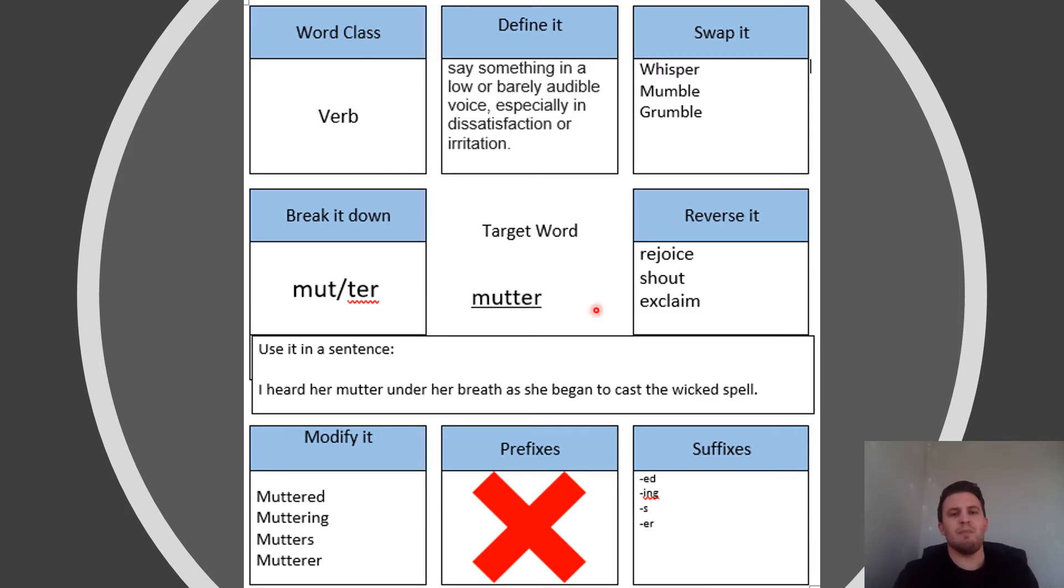Here we go, here are some answers. Mutter is a verb. It's an action, it's a doing word. It means to say something in a low or barely audible voice, so very, very quiet. We normally tend to mutter if we're dissatisfied or irritated, a little bit annoyed, a little bit angry. We mutter something under our breath. Another word we could use is whisper, that little quiet sound, or we could use something like mumble or grumble. That sort of slow sound that we can't really work out what somebody's saying when we talk about mumbling, grumbling, and muttering.